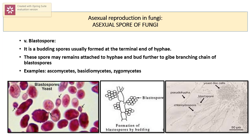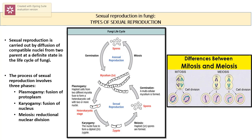The example of blastospores is yeast. In the microscopic slide of yeast, you can clearly see the budding pattern happening, and this is a type of blastospore asexual reproduction.